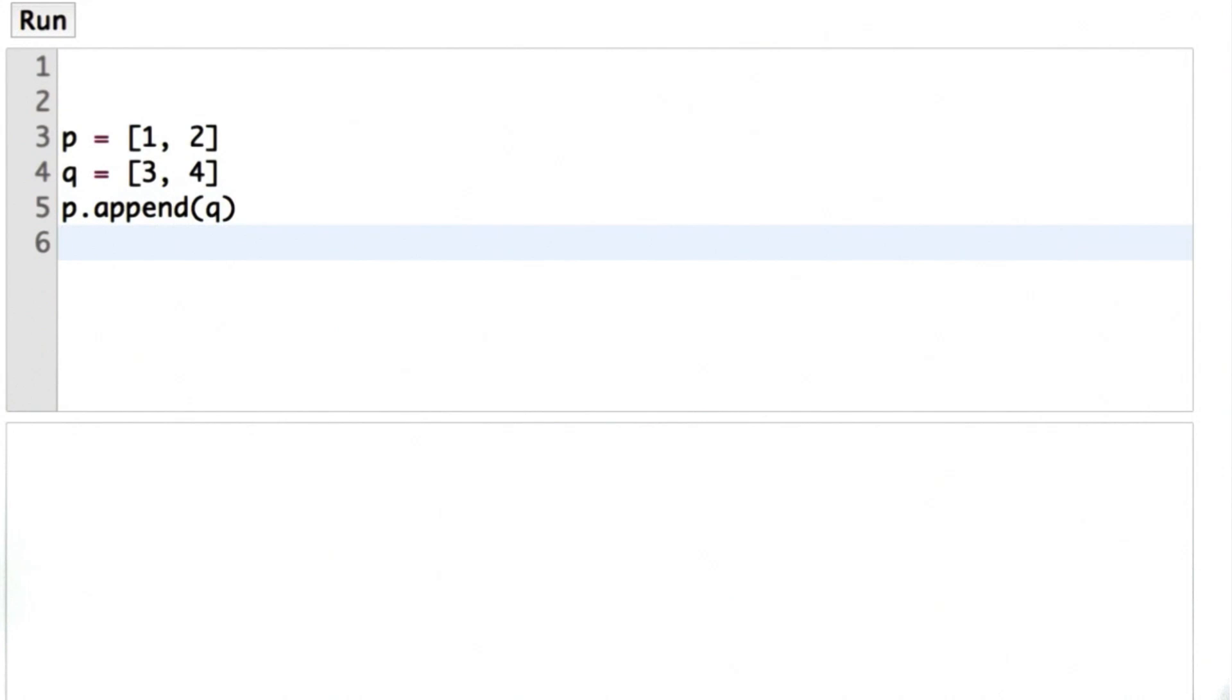So what do you think will happen if we try an assignment like this? We're replacing the element at position 1 of q with the value 5. Does that change the value of p?